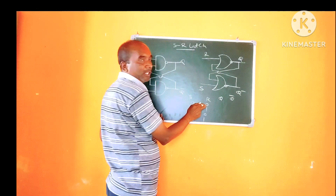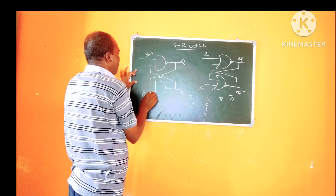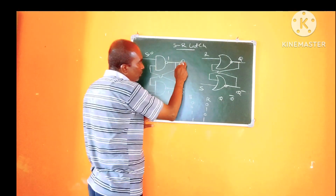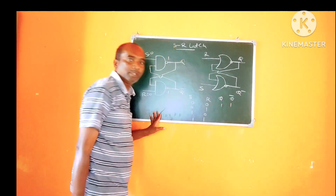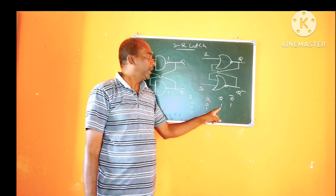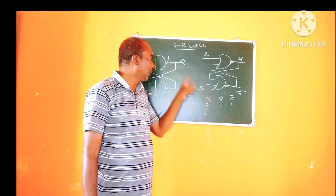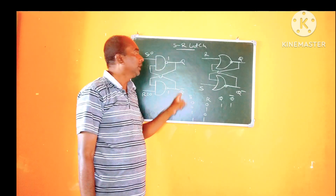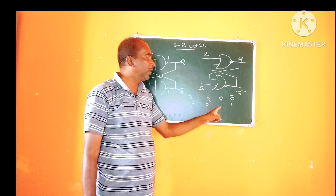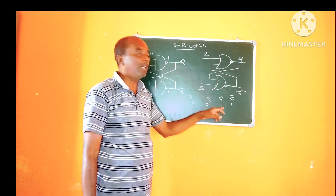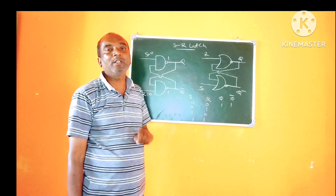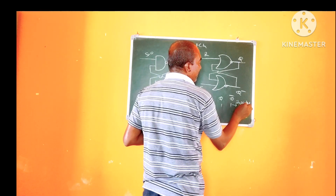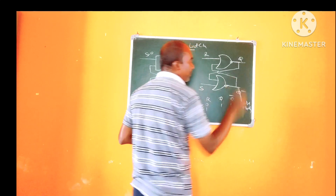If S=0 and R=0 is given as the input, irrespective of the other signal, it produces Q=1 and Q-bar=1. But if Q equals 1, the complement Q-bar should be 0 — yet it also produces 1. This violates the fundamental property of the latch or flip-flop. Therefore, this state is termed invalid or forbidden.